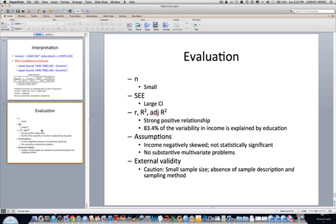we have a fairly strong positive relationship that appears quite linear. 83.4% of the variability in income is explained by education, and that's good.